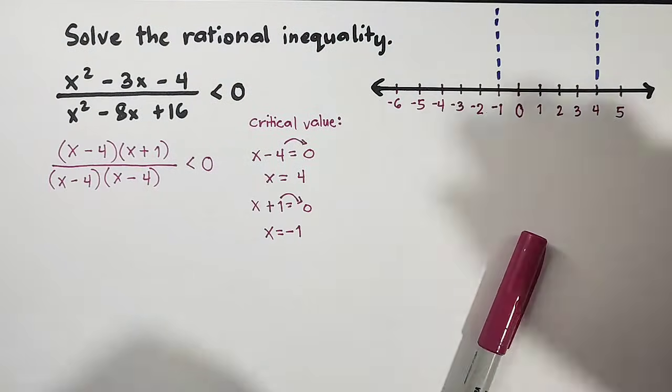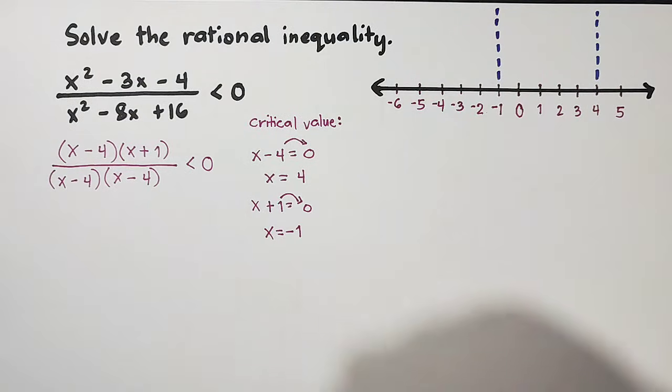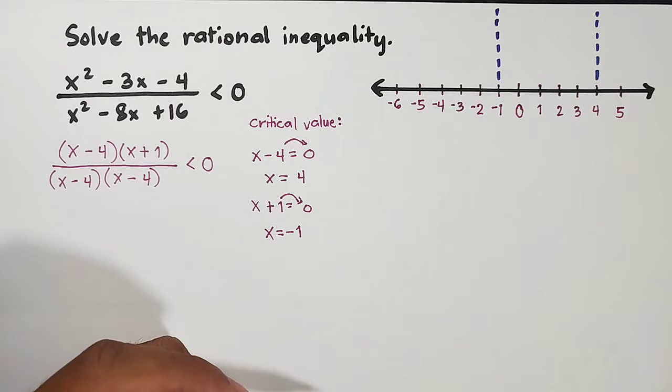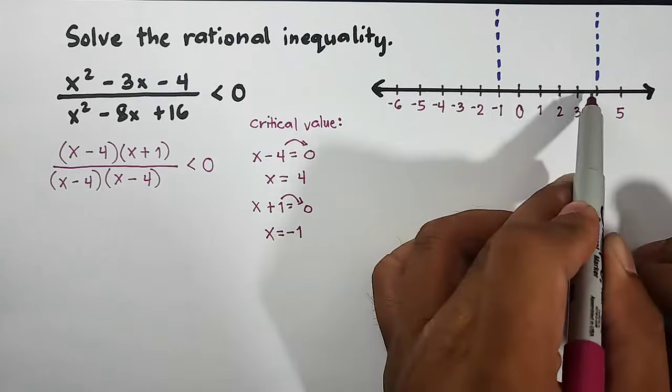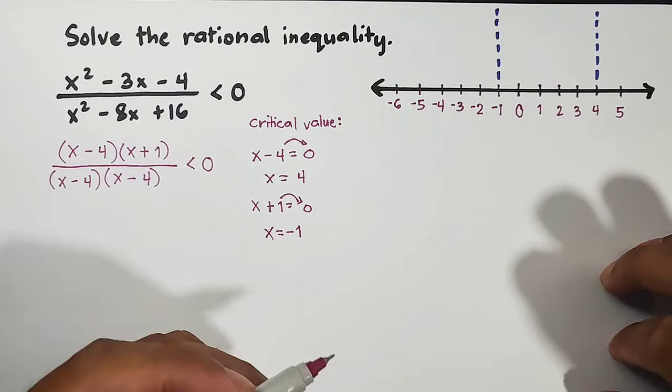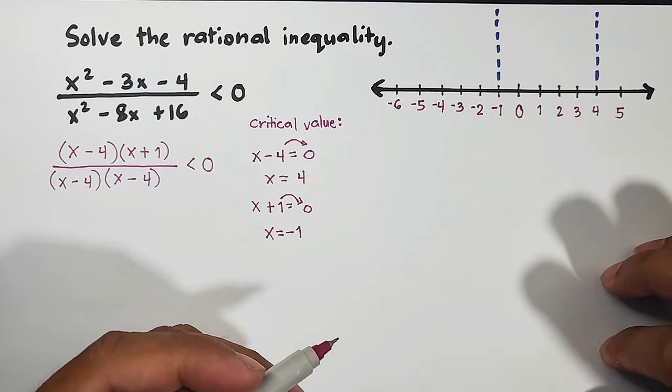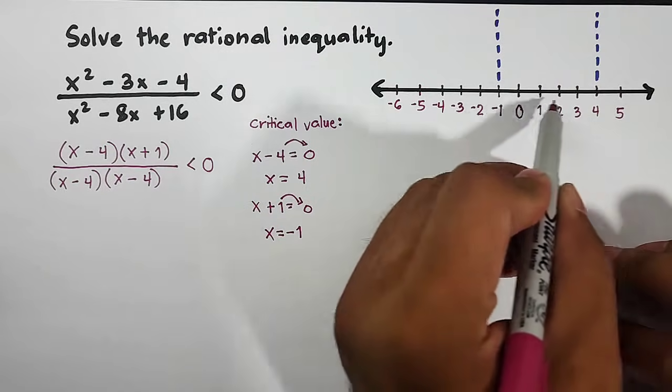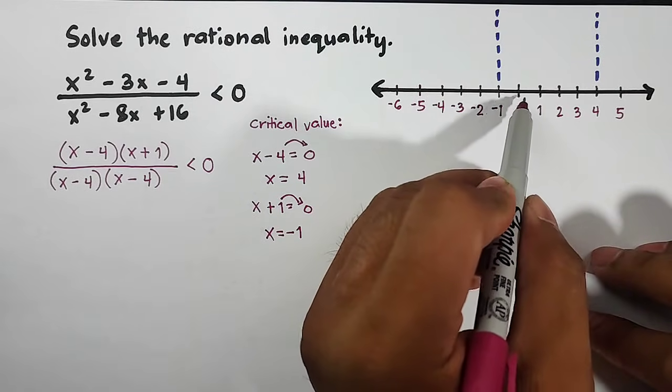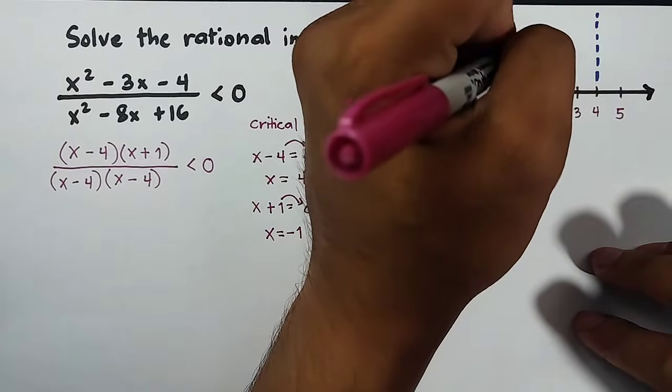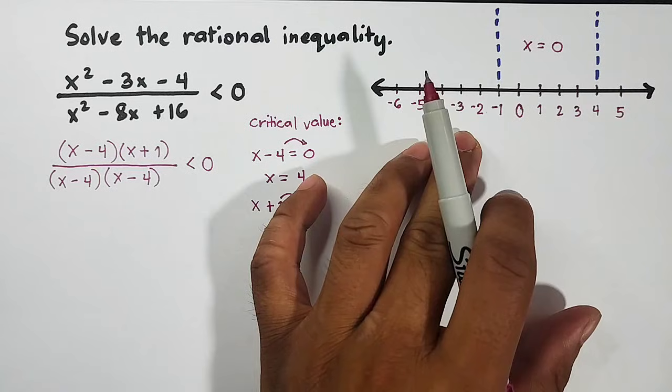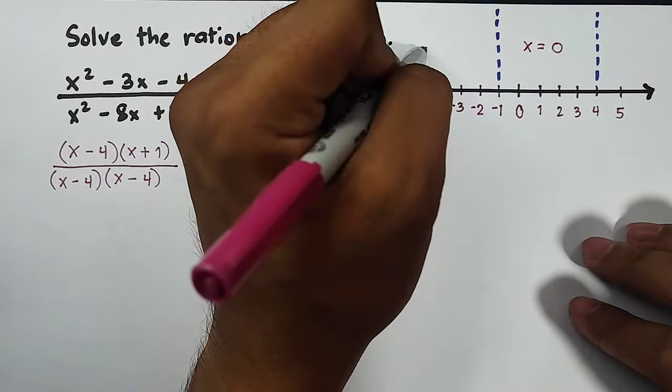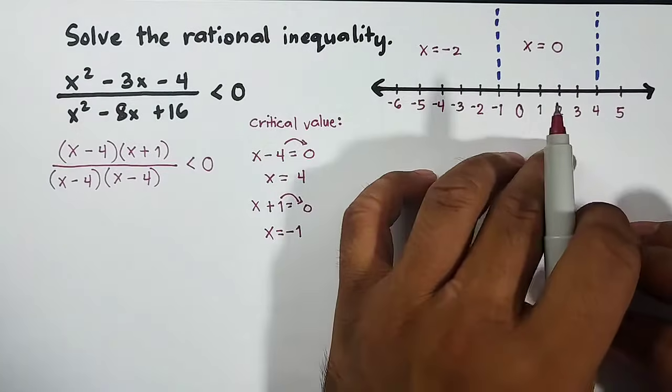What will happen now to get the actual solution sets or possible values of x? We need to assign or get representatives from each region. In the middle region, the numbers are 0, 1, 2, and 3. We can choose x = 0 to represent this region. Here I will choose x = -2, and on the other side I'll use x = 5.